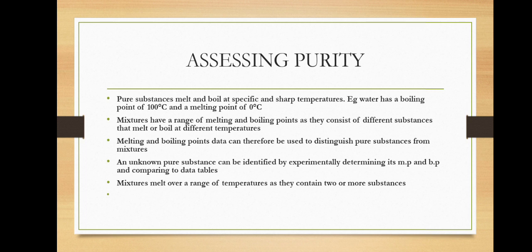The purity of a substance is defined as the degree to which a substance is undiluted or unmixed with other material. A pure substance is made of a single substance. The melting point is the temperature at which a substance melts, and the boiling point is the temperature at which it boils. Boiling point and melting point can give us an indication of how pure a substance is.